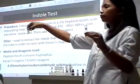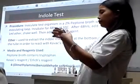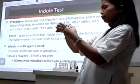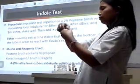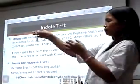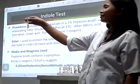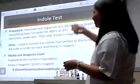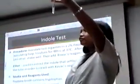For the indole test, add 1 ml of reagent. In the lab, you add your ether and afterwards you shake. Add ether then shake vigorously so that you will be able to extract your indole.